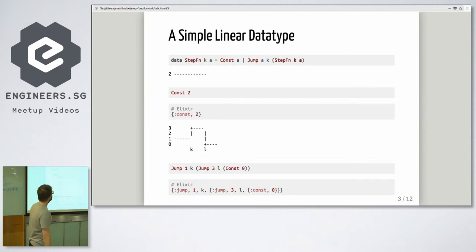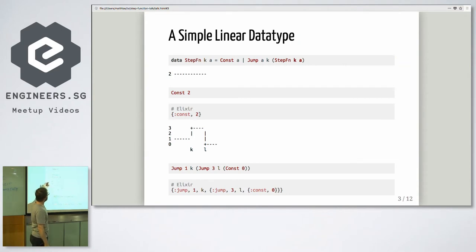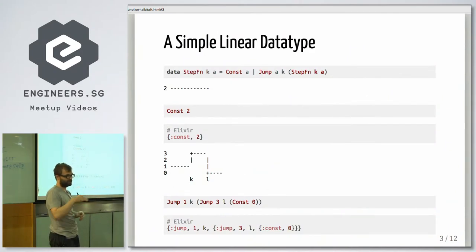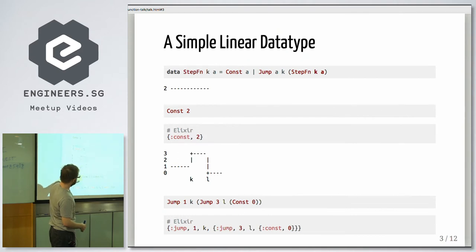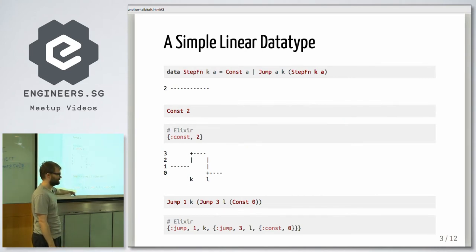The concepts are very similar. My very simple data structure is basically one of two cases: either it's a constant — for example, constant two, which is all the same — or it's a jump. The jump basically has first a value on the left, a jump point which we call K, and then the rest, which can be another constant or more jumps. So you see it starts at one, then we jump at K to three, and at L we have another jump point and go down to zero. In Elixir you could write it down like that and then pattern match over those.